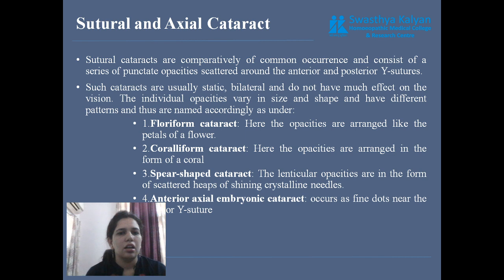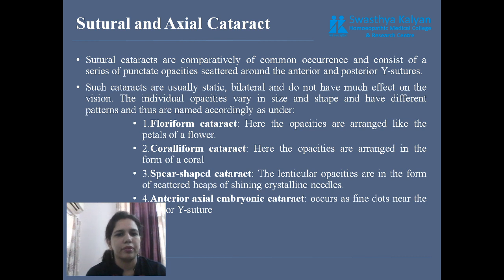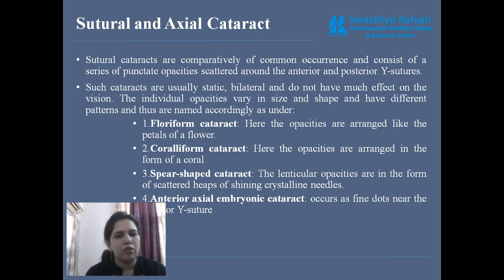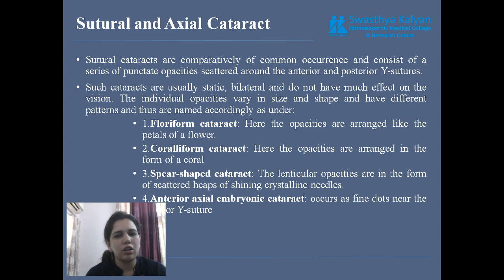Sutural cataracts are comparatively common. The most common opacity is around the anterior and posterior Y sutures of the lens. Such cataracts are usually static, bilateral and do not cause much vision loss. Individual opacities vary in size and shape with different patterns and are named accordingly: flowery form like petals or flower, coralliform in the form of coral, spear-shaped cataract with lenticular opacities in the form of scattered heaps of shining crystalline needles. Anterior axial embryonic cataract occurs as fine dots on the anterior Y sutures.